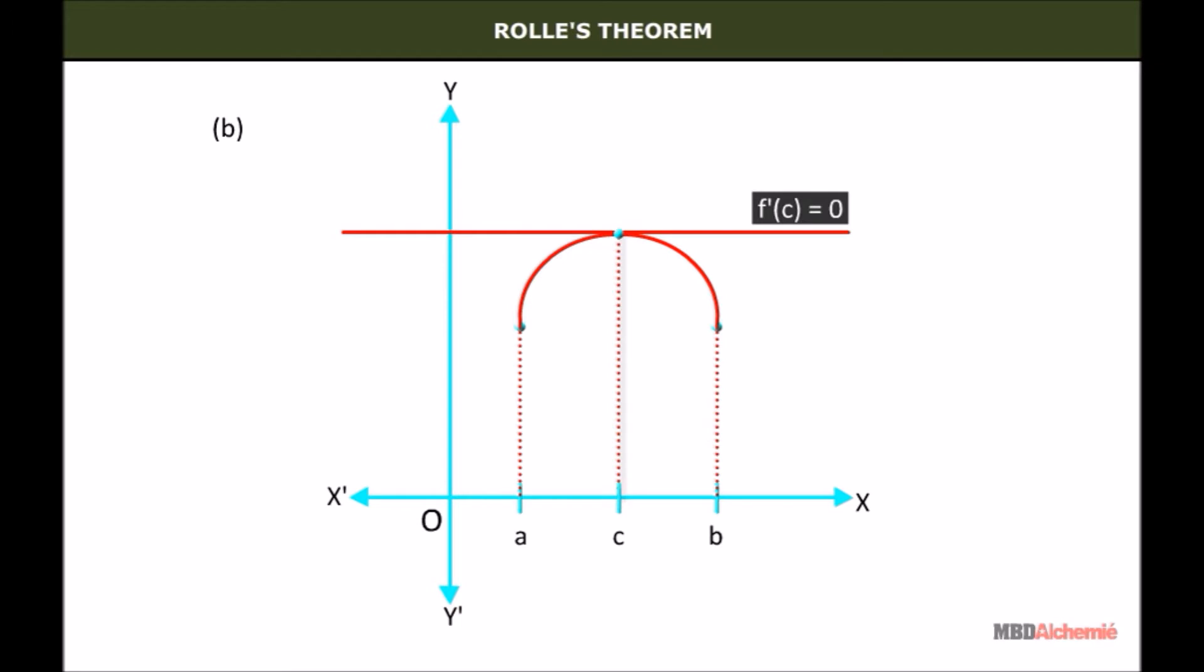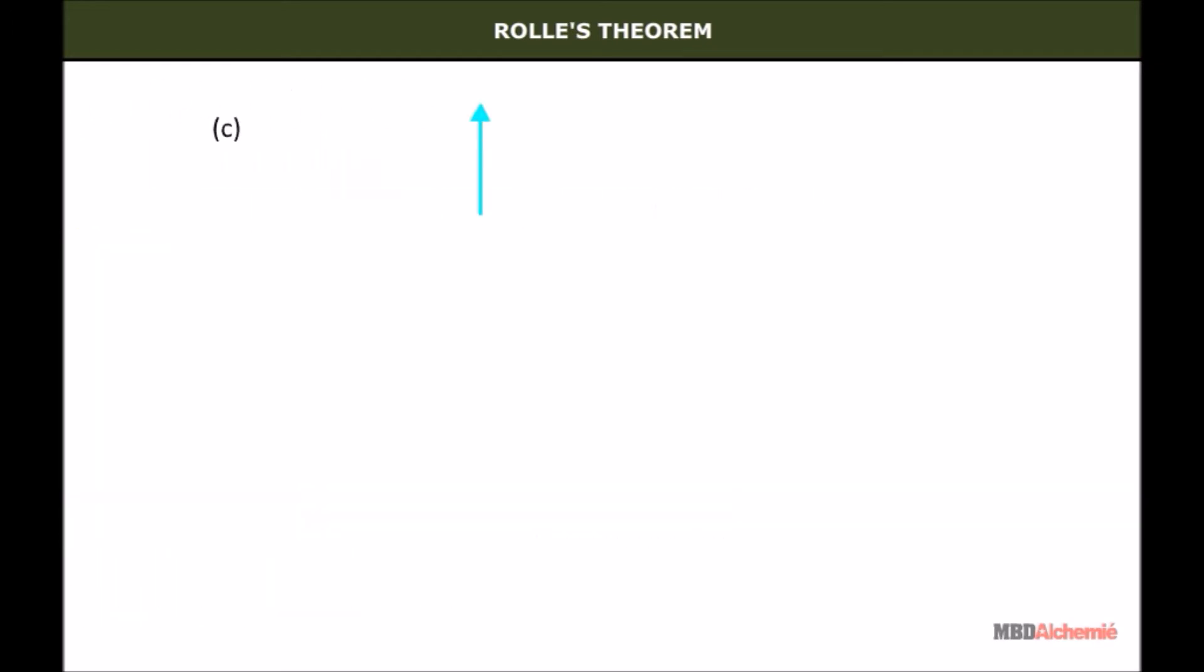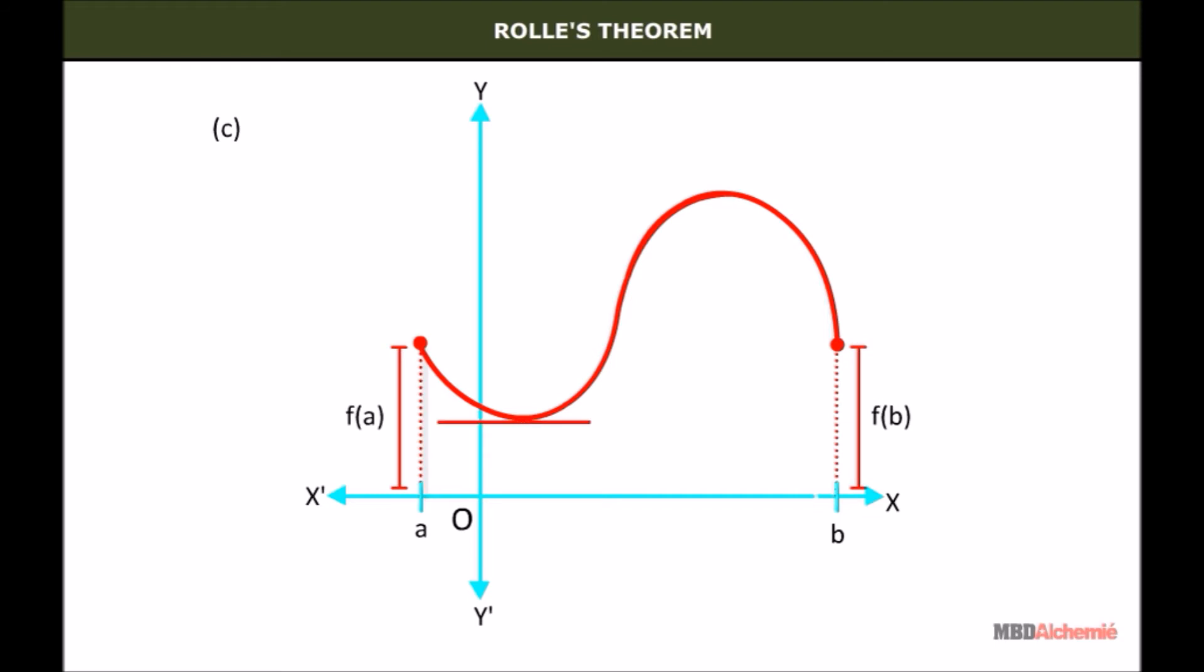all conditions are true for this graph. In the third graph, f(a) = f(b). Here, two lines are possible at which the tangent is parallel to the x-axis. That is, f'(x) = 0. Let these be c1 and c2. Here,